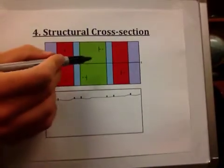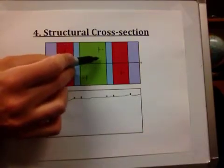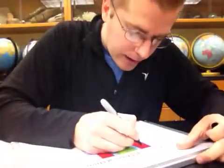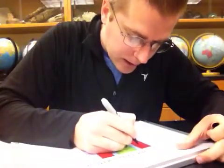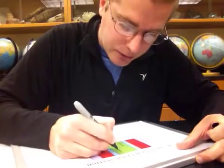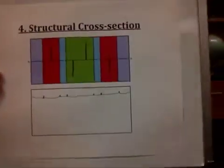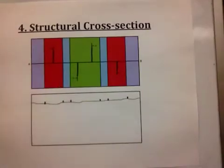The first thing you want to do is take a ruler and extend the strike of each symbol until it hits your A to B line. Line up the ruler. You want this to be as straight as possible. You can see I am free handing it, but you should use a ruler when doing this. We have extended the strike of each of our symbols until it hits the A to B line.